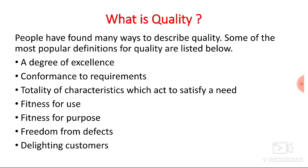Quality is different for different products or applications. Suppose I am buying a food item — in that case quality depends on its taste; I am not interested in its dimension. Suppose I am buying a shirt — I will be interested in the feel after wearing it. Suppose I am buying a vehicle — I will be interested in its performance. So the quality of the product depends on the type of product or application.